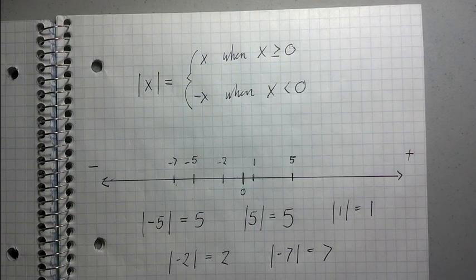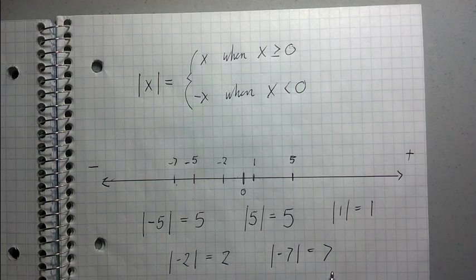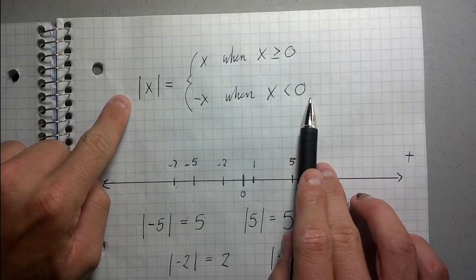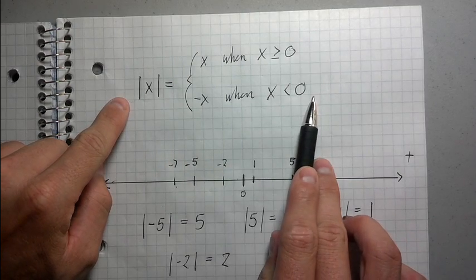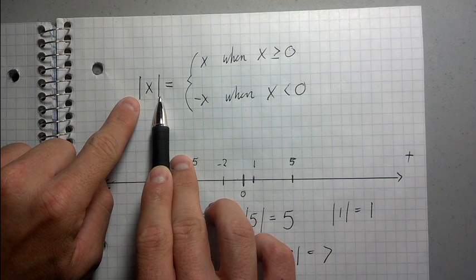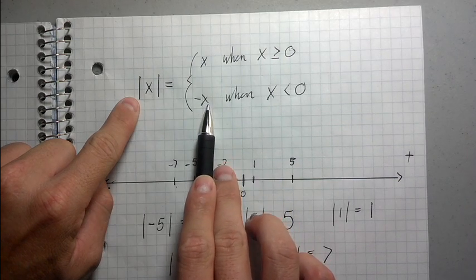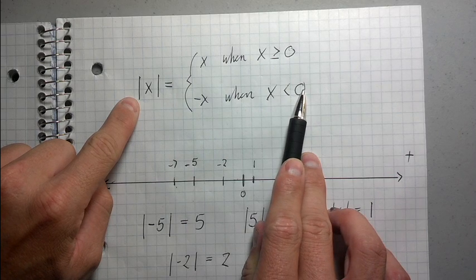So, now that you have a basic understanding of what absolute value is talking about, look back at this definition and see if this makes a little more sense. So, this is a piecewise definition of absolute value. What it's saying is that x is different depending on whether or not x is positive or negative to begin with.